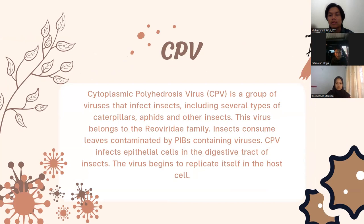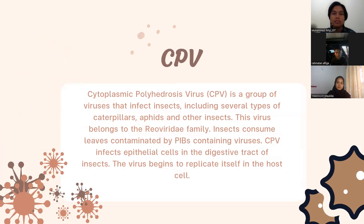Cytoplasmic Polyhedrosis Virus, CPV, is a group of viruses that infect insects, including several types of caterpillars and other insects. This virus belongs to the Reoviridae family. Insects consume leaves contaminated with polyhedra containing the virus. CPV infects epithelial cells in the digestive tract of insects, where the virus begins to replicate itself in the host cells.